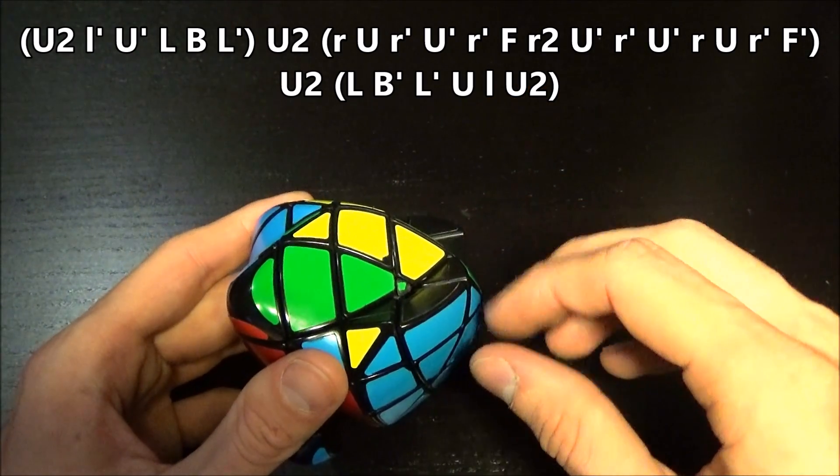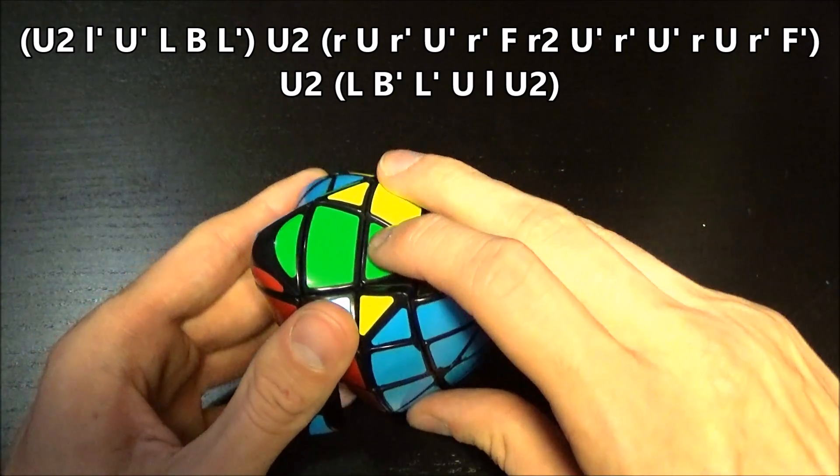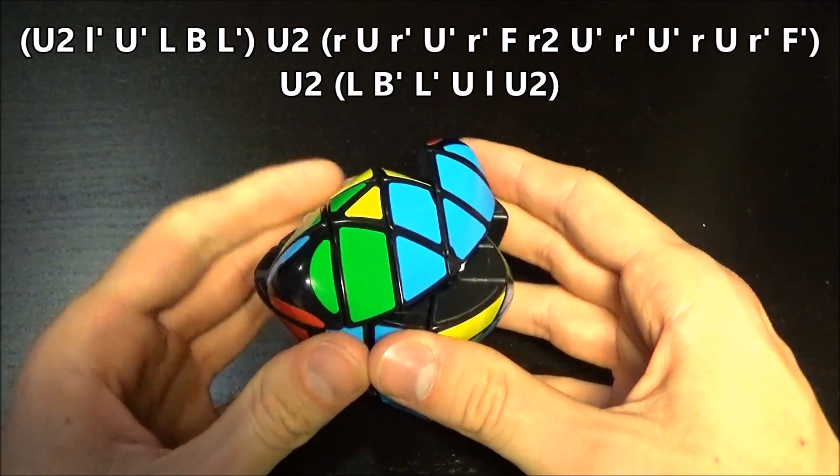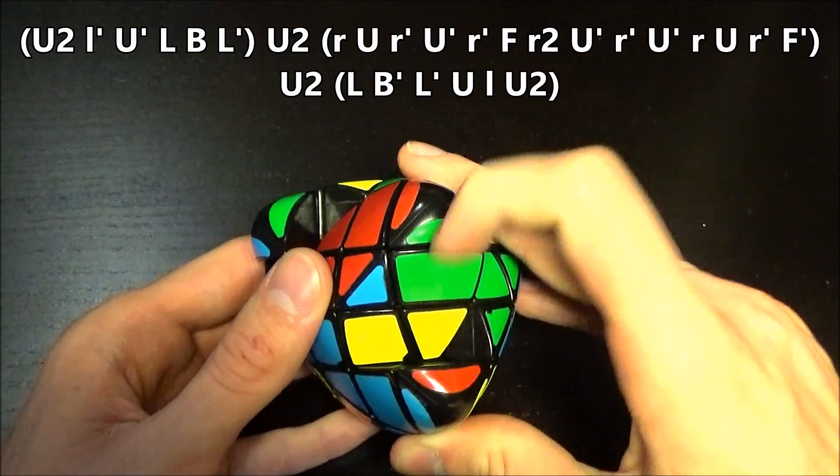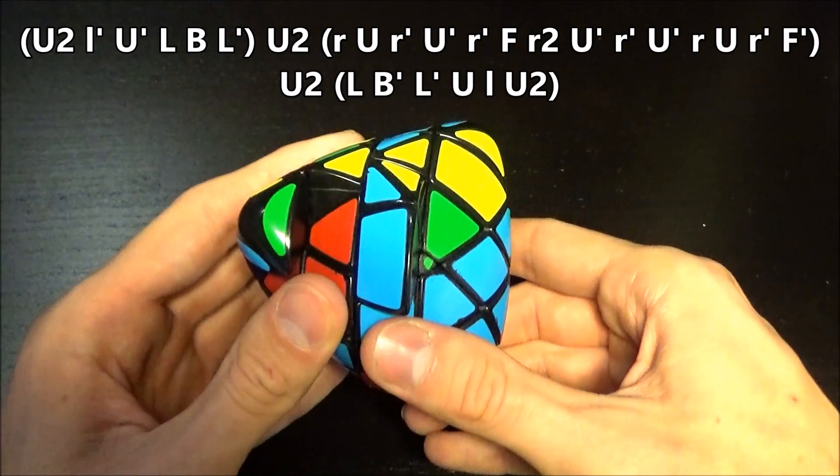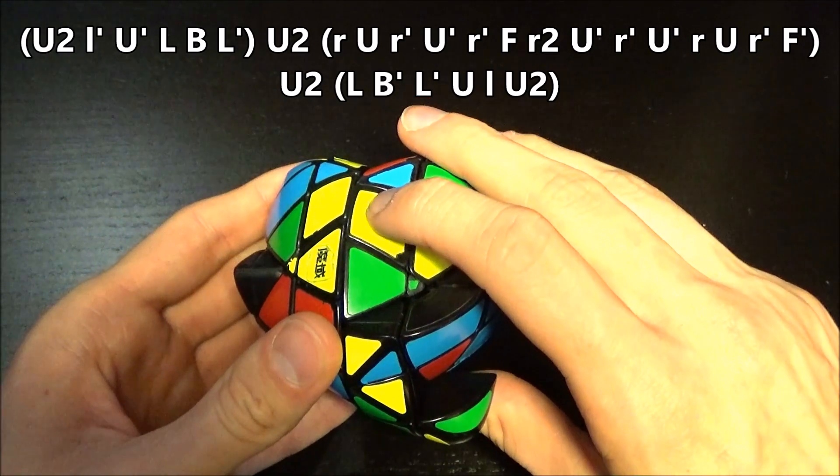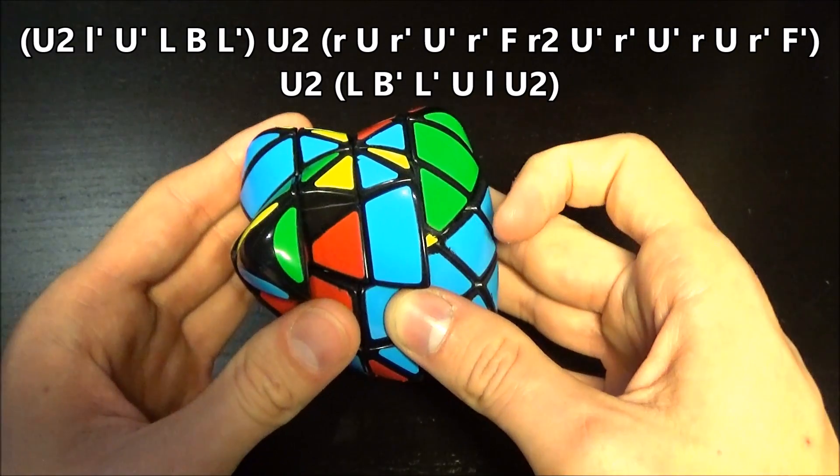But here you have to do the right with the inner and the outer layer. Right, Up, Right Inverted, Up Inverted, Right Inverted, Front, Right 2, Up Inverted, Right Inverted, Up Inverted, Right, Up, Right Inverted.